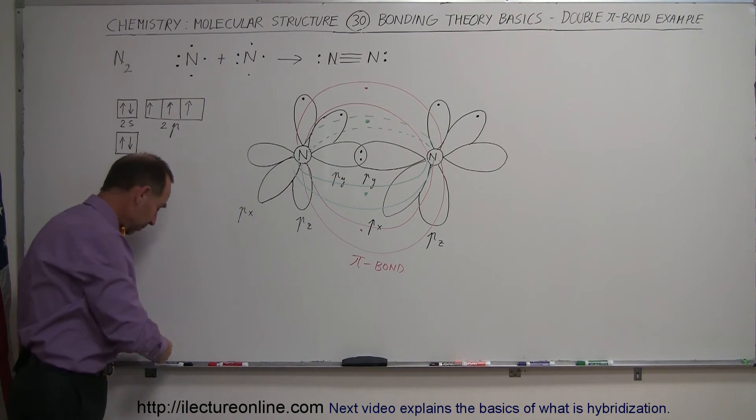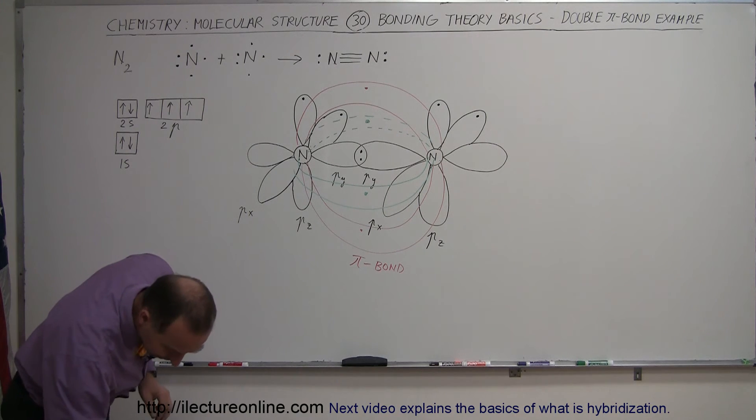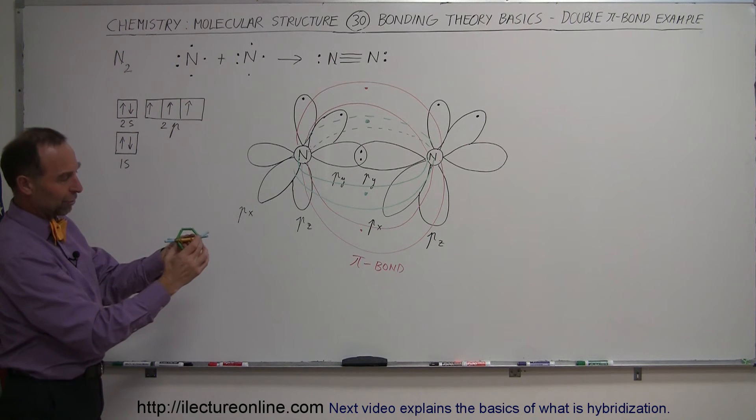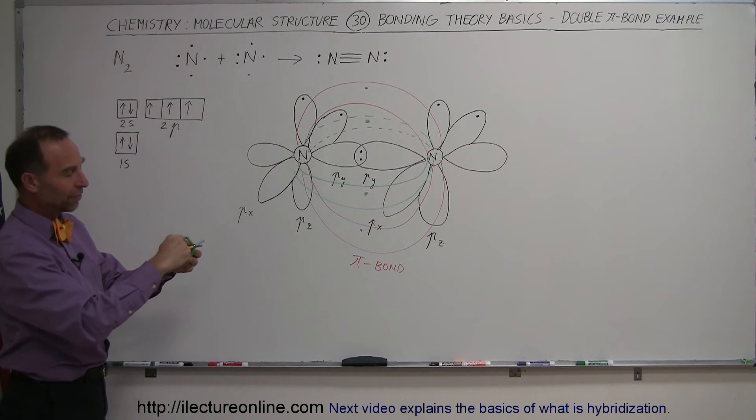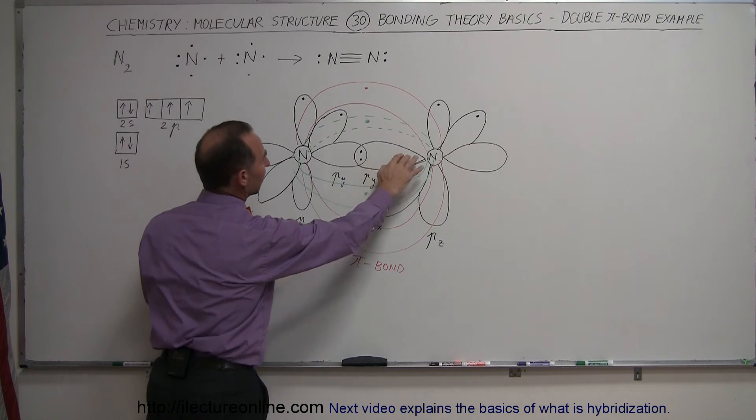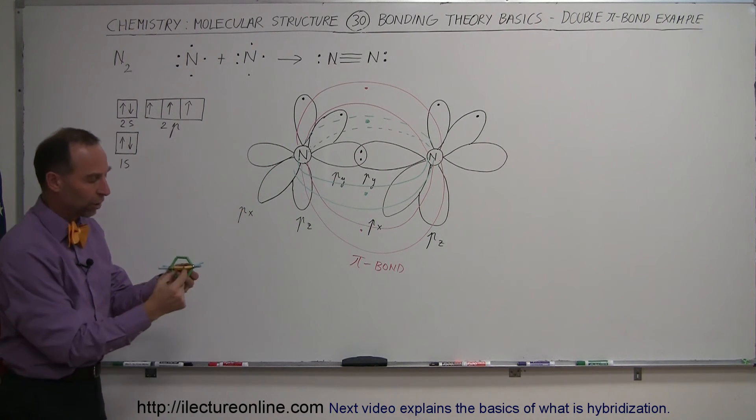And just to help illustrate what that looks like, I got my little magnets out here. There you go. Here's the two nitrogen nuclei. We have the single sigma bond between the two, the pp sigma from the py orbitals joining together like that.